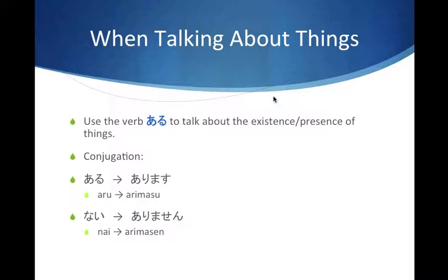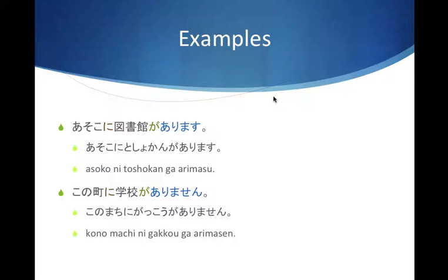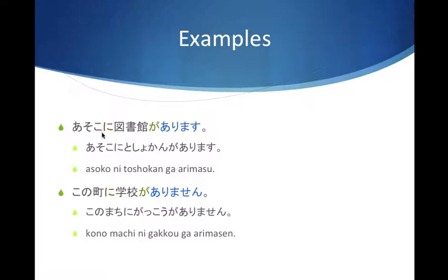Let's work through the first example: 'Asoko ni toshokan ga arimasu.' Asoko means 'over there.' Ni is the particle indicating location. Toshokan means 'library,' and it exists at asoko — over there. So: toshokan ga arimasu means 'there is a library.' Combined: 'Asoko ni toshokan ga arimasu' — there is a library over there. It's an existence: that library exists, it's present over there.